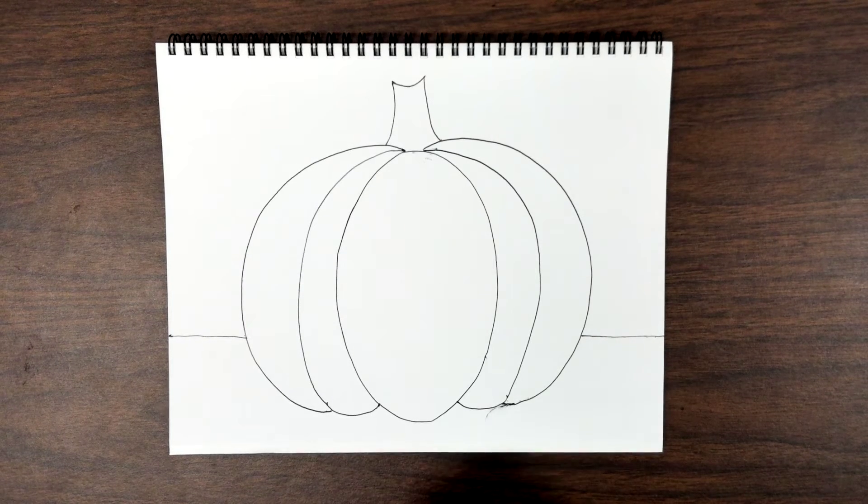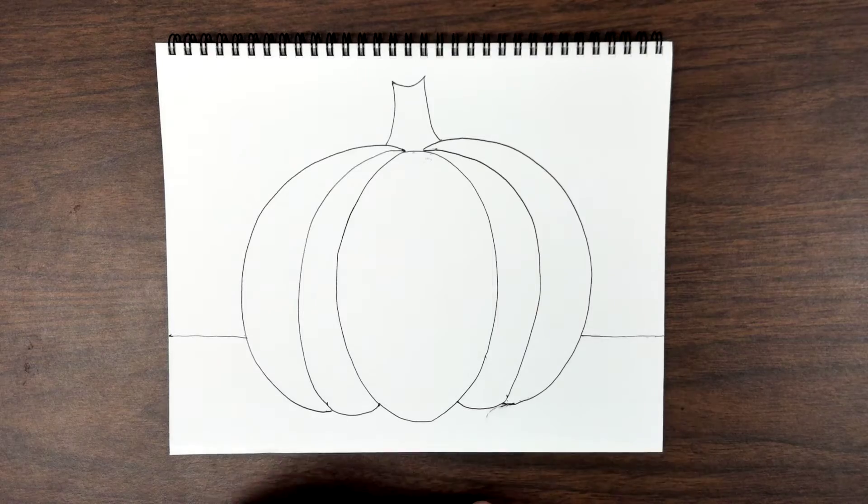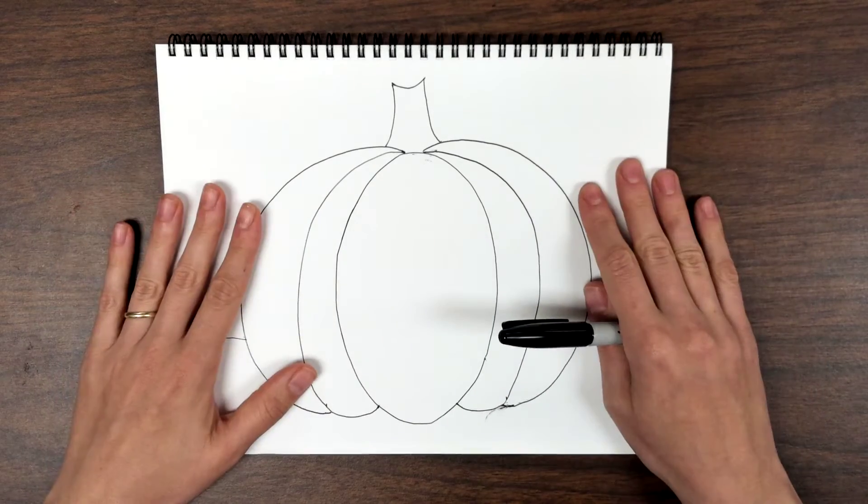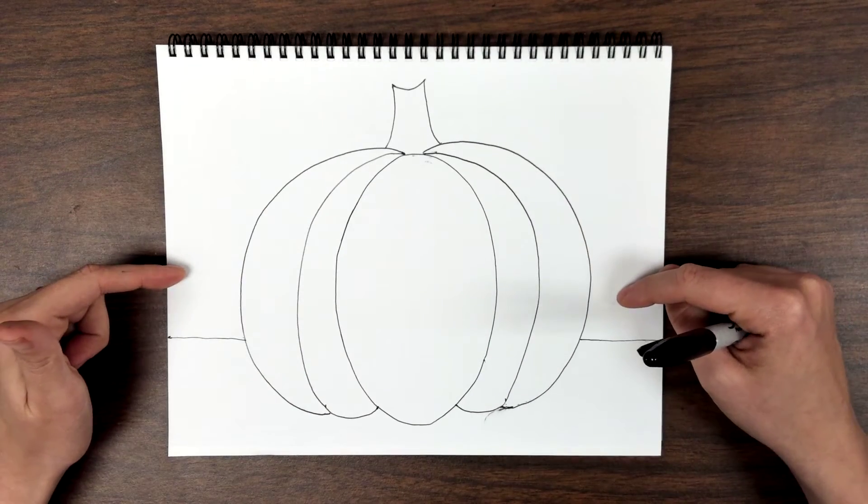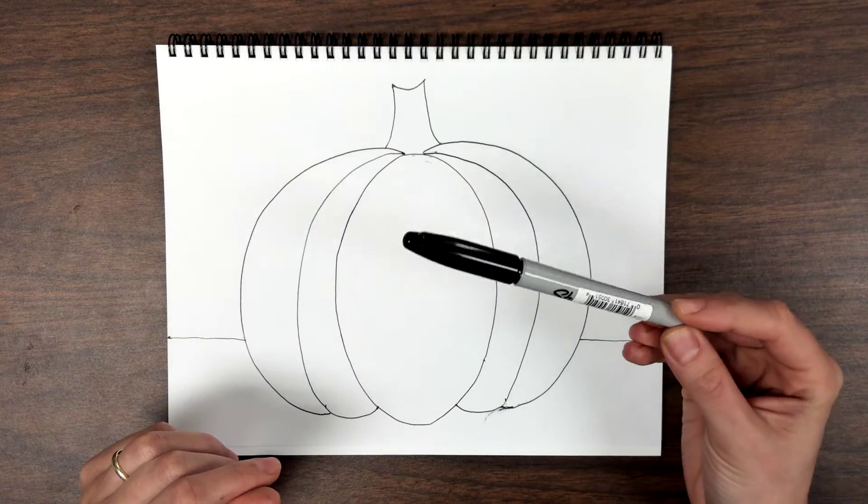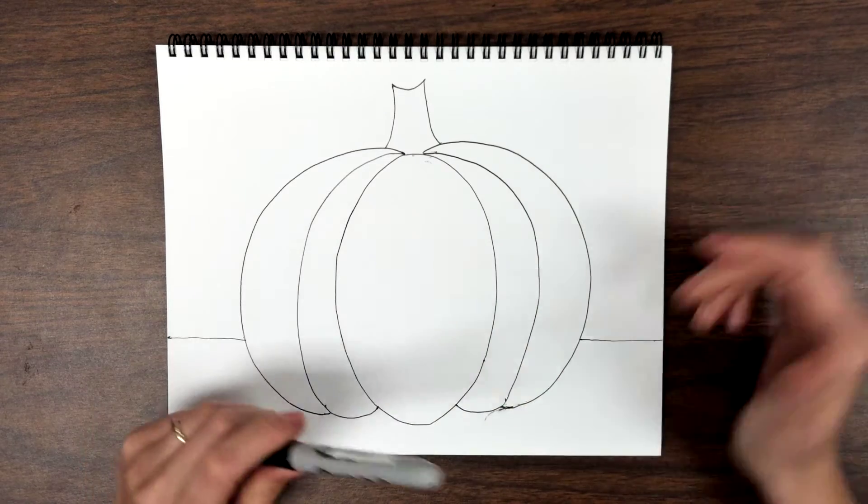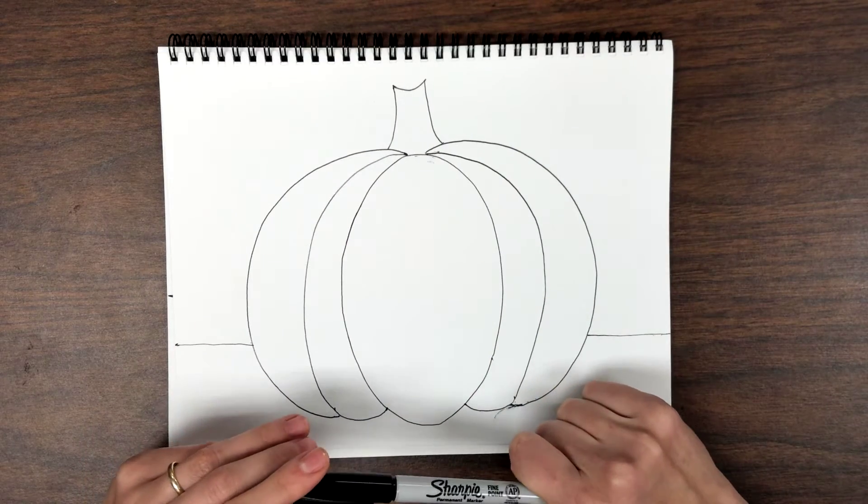This is step three for kindergarten pumpkin drawing. For this step, you will need your art book with your pumpkin drawing, and then you would also need a marker. It can be a permanent marker or a washable Crayola marker would work as well.